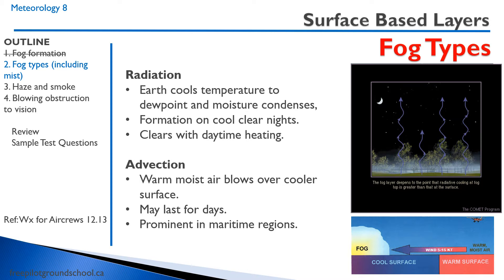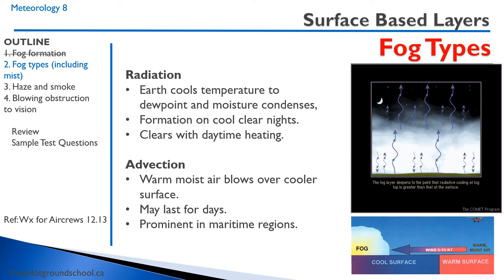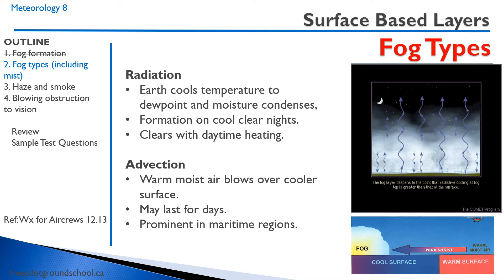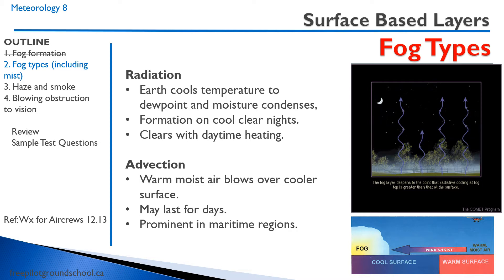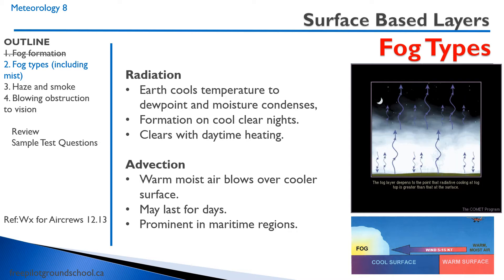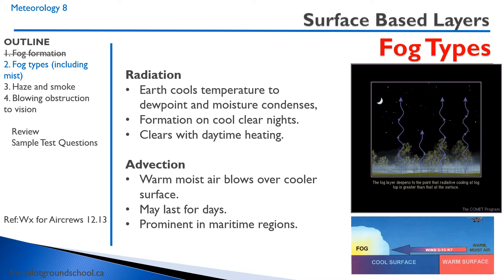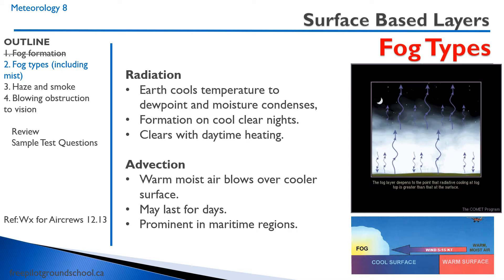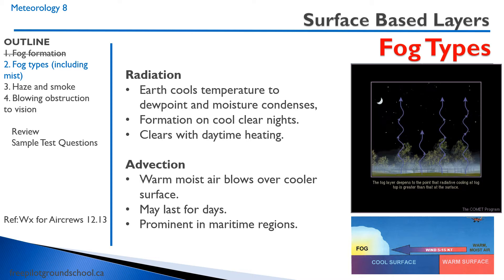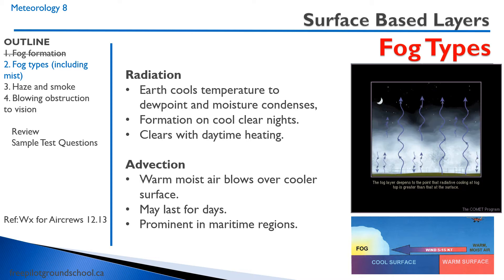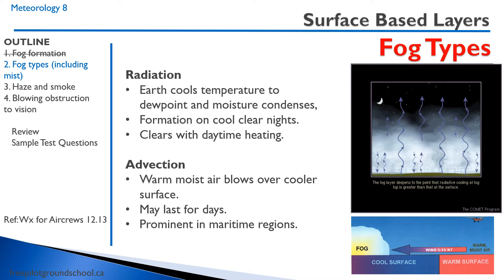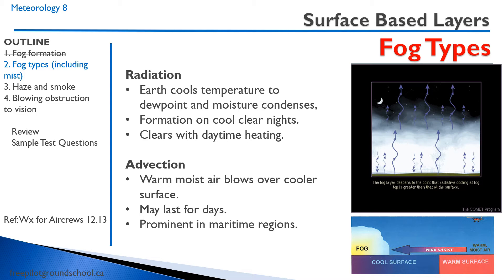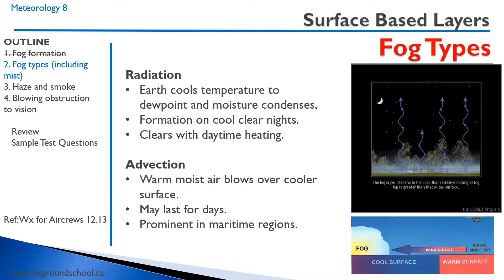Secondly, we have advection fog. This is most common in the maritimes. This occurs when warm, moist air blows over a cooler surface. With advection fog, you have the rare phenomenon of very bad visibility and strong winds. The warm, moist air over the ocean is blown over the cool land, and when it hits the cool land, the water vapor condenses, forming advection fog. This type of fog may last for days — it could be a week and it doesn't let up.